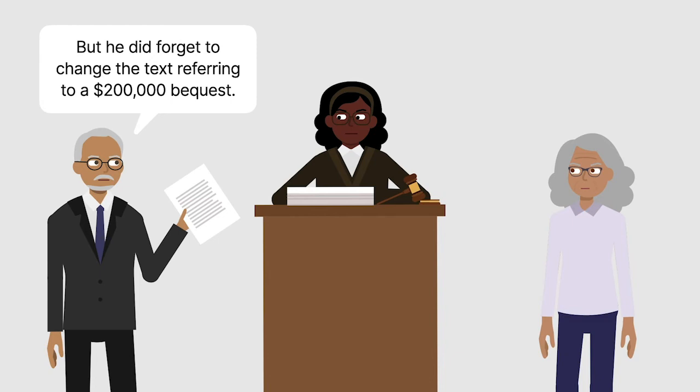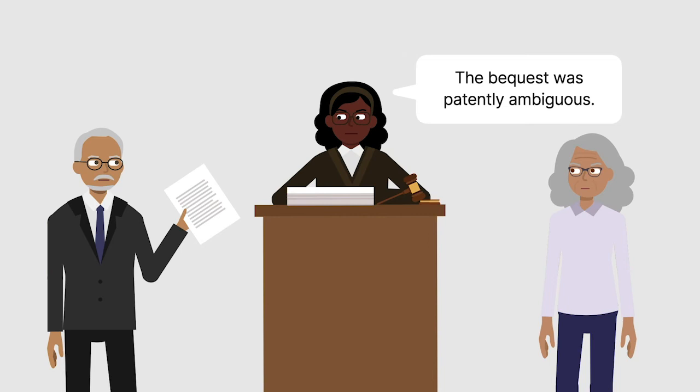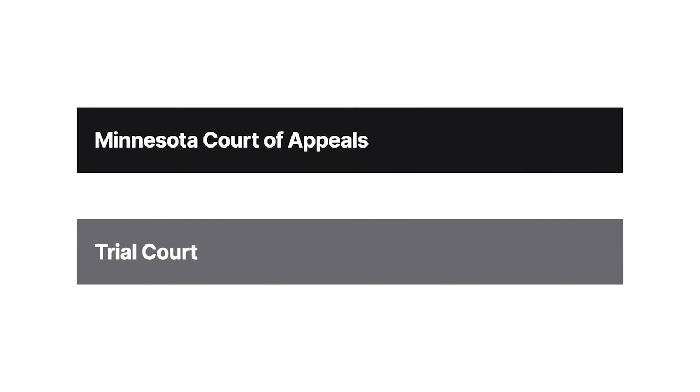Vining didn't submit any evidence to contradict Black's testimony. The trial court determined that the bequest was patently ambiguous because the words specified one amount but the numbers specified another. To resolve this ambiguity, the trial court considered Black's testimony. It found his testimony credible and construed the bequest to give Vining $25,000. Vining appealed to the Minnesota Court of Appeals.